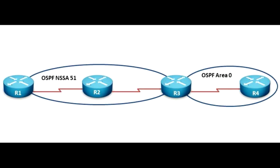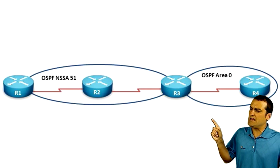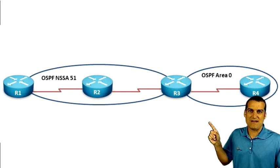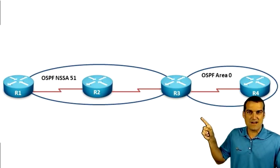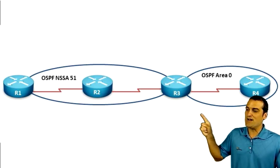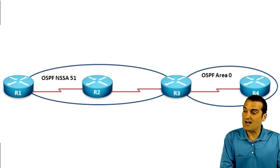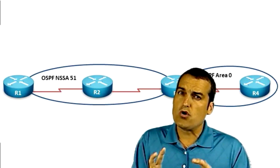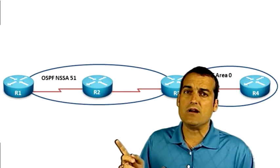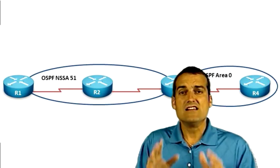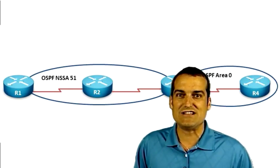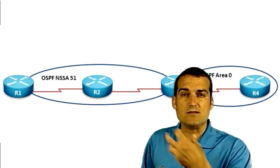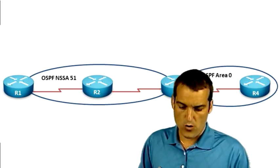Let's take a look at the topology we built for today's video blog. It is a simple four-device topology with router 1, router 2, and router 3 making up an NSSA — a not-so-stubby area — area 51. Router 3 is an area-border router connecting area 51 with OSPF area 0. The not-so-stubby area is where we want to control and dynamically filter LSA types, but it will also have some redistribution. Specifically, we're going to bring in RIP routes into the not-so-stubby area on R1.